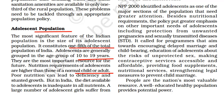The National Population Policy 2000 recognizes that adolescents are the most important section of the population. Besides nutrition requirements, the policy emphasizes protection from unwanted pregnancies and STDs — sexually transmitted diseases. It calls for programs encouraging delayed marriage and childbearing, education of adolescents about the risks of unprotected sex, making contraceptive services accessible and affordable, providing food supplements and nutritional requirements, and strengthening legal measures to prevent child marriage. People are a nation's most valuable resource — a well-educated, healthy population provides potential power.